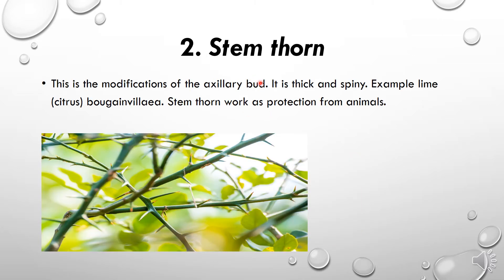Stem thorns are pointed or spine-like structures. You might have seen these spine-like structures on the stems of various plants — for example, on the surface of a rose stem. These spines function to protect the plant. They are a modification of the axillary buds. They are thick and spiny. For example, in the case of citrus, in the lemon plant you can see thorn-like structures on the stem. Stem thorns work as protection from animals.